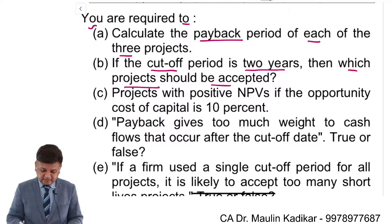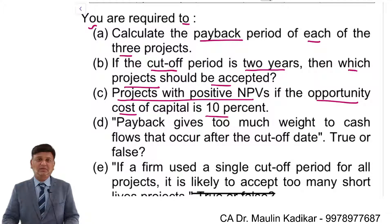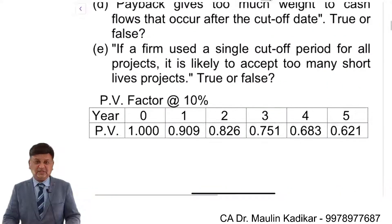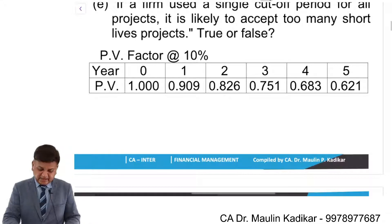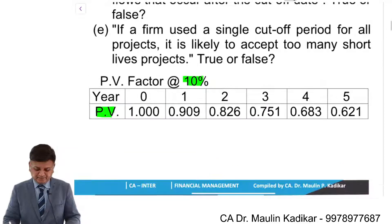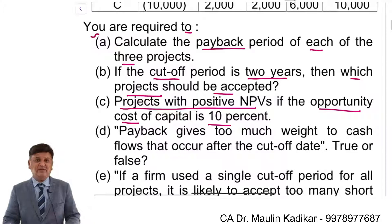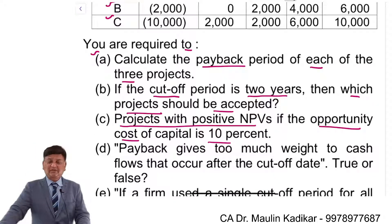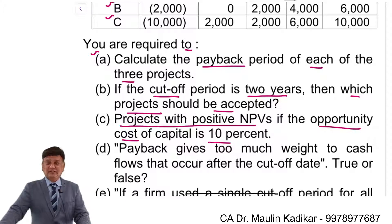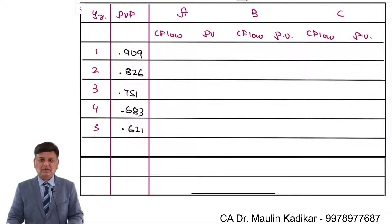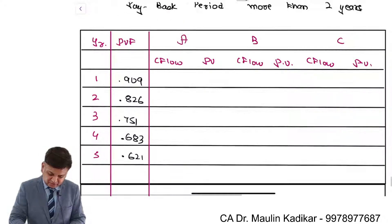The next part requires us to compute the projects with positive NPV if the opportunity cost of capital is 10%. We need to compute the NPV of each project using a discounting rate of 10%. Present value factor information has been given to us, and we must use those factors for the NPV calculation.